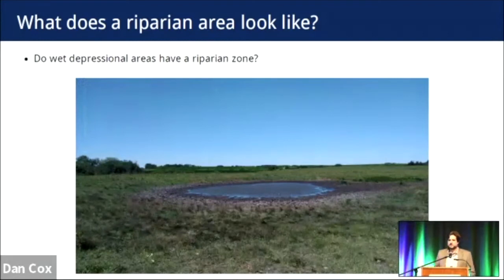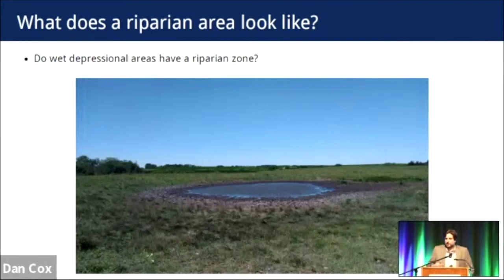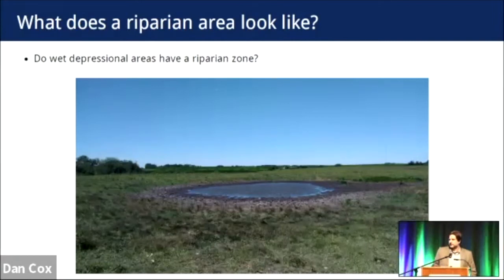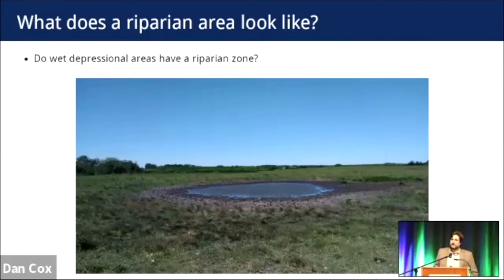Here's another example: a large puddle — a low-lying area in a pasture field. It has water, it's naturally occurring. Does it have a riparian area? It doesn't have a nice ring of vegetation around it, but there's still a transition from terrestrial to aquatic environment. I think we can apply the same principles of riparian areas to a situation like this. One year we may have standing water, another we might not, or maybe only in the spring. I want you to start seeing riparian areas in a whole bunch of different places.